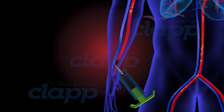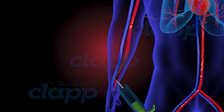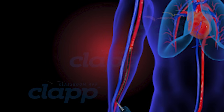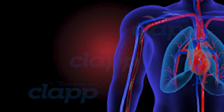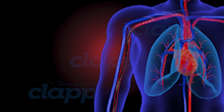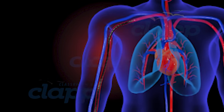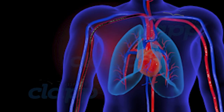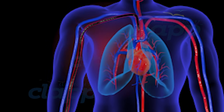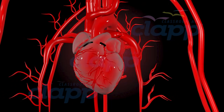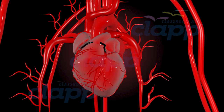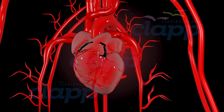Using x-ray guidance, the catheter is carefully threaded through the blood vessels until it reaches the area to be examined. Once the catheter is in position, the contrast dye is injected through the catheter into the bloodstream.